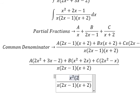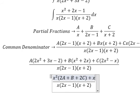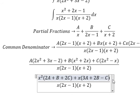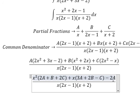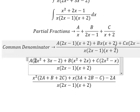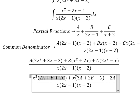About s squared, we have 2A plus B plus 2C. About s, we have 3A plus 2B minus C. About the constant term, we have negative 2A. So we just follow the coefficients: number 2 with A, number 1 with B, number 2 with C — that's why we have 2A plus B plus 2C. Similar for the other terms.